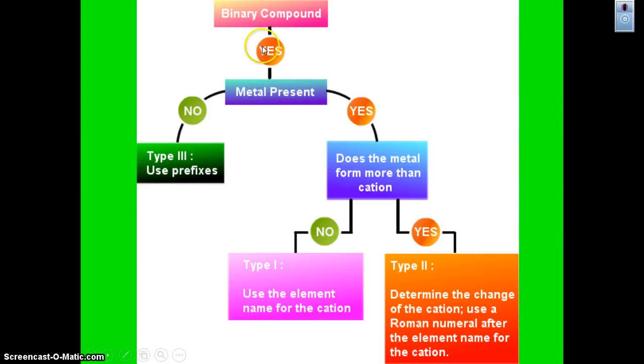Okay, so the focus yesterday was binary compounds, and we looked at Type 1. So what you have to ask yourself when you look at a compound is, is it binary? That means does it have just two elements? If it is, then we look for the presence of a metal. If not, it's a Type 3, uses prefixes, and we'll talk about that on Monday.